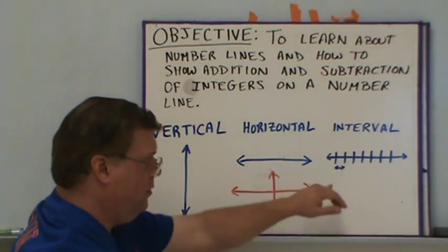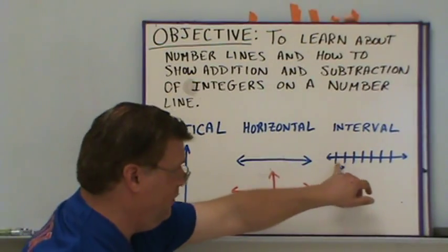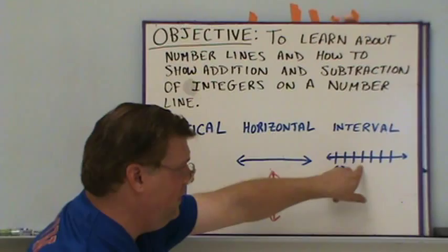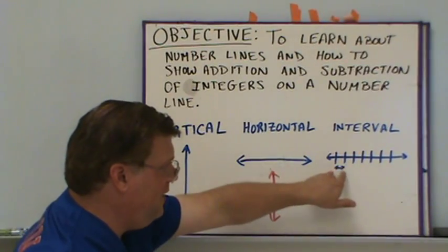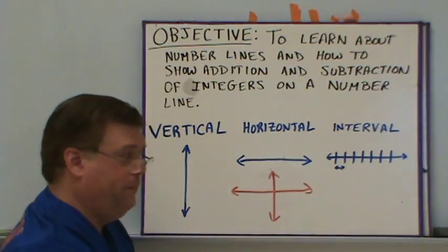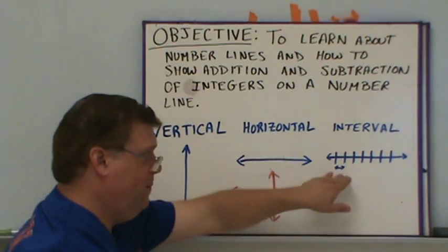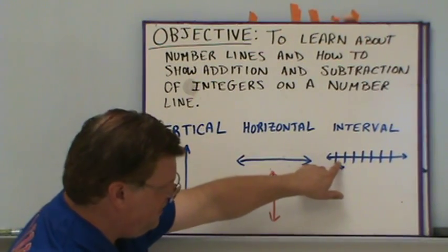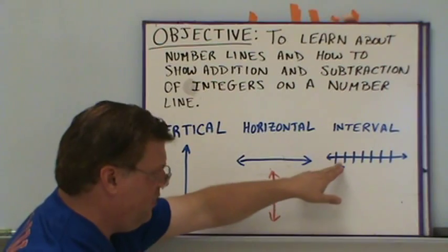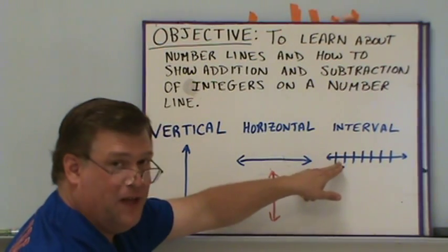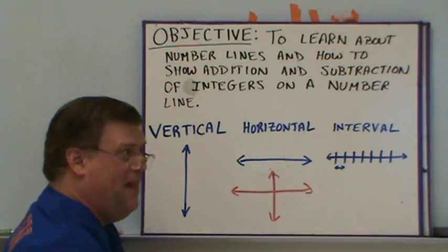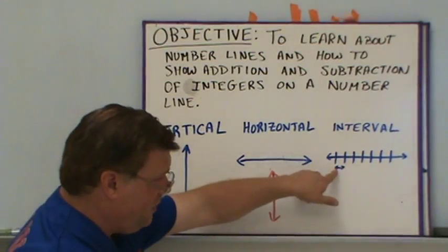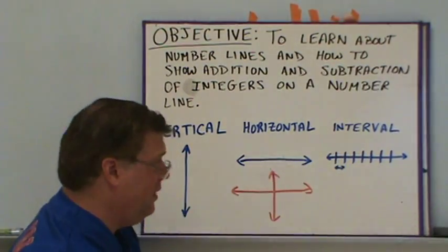Number lines traditionally have little tick marks on them, and the spacing is evenly done. That spacing is called an interval. The space between marks is an interval, which means that interval has some meaning — it could be a value of 1, 10, a tenth, a hundredth, a fraction of something. But there will be an even number across the line.